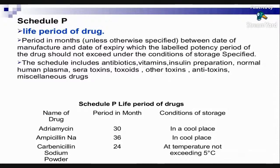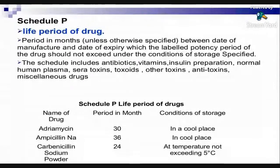Here is a table related to Schedule P — the life period of drugs. It has three columns: the first contains the name of the drug, the second contains the period in months, and the third contains the condition of storage. For example, Adriamycin has a life period of 30 months and should be stored in a cool place. Other drugs similarly have different life periods and storage conditions.